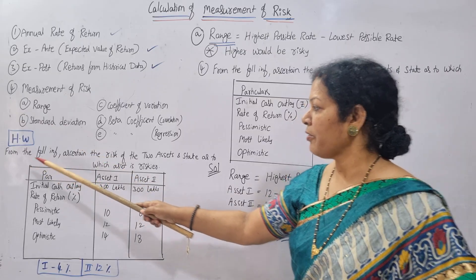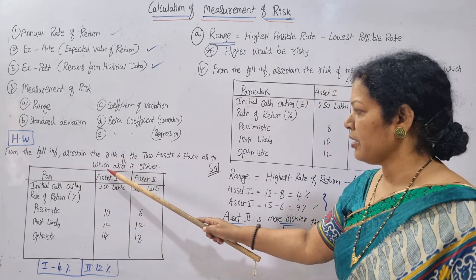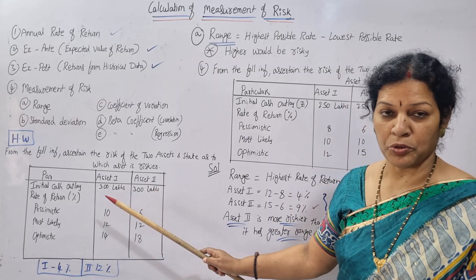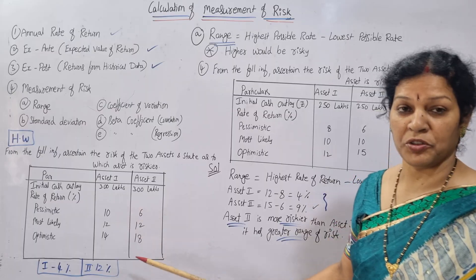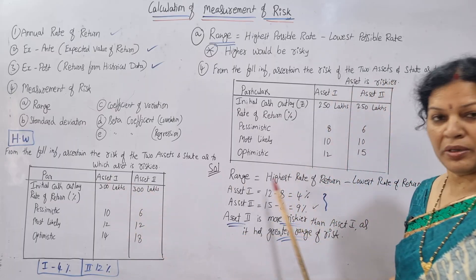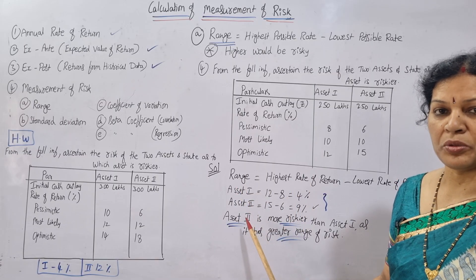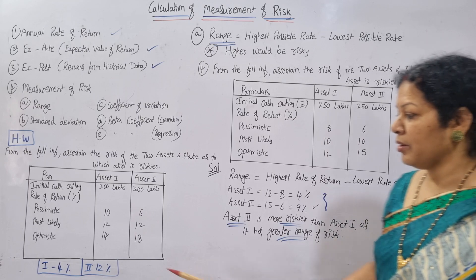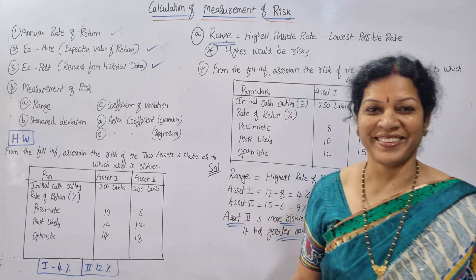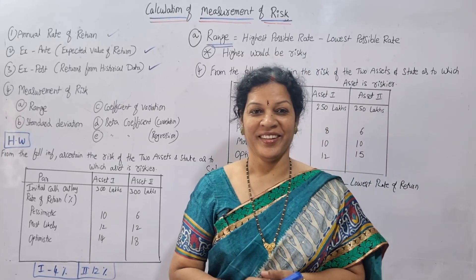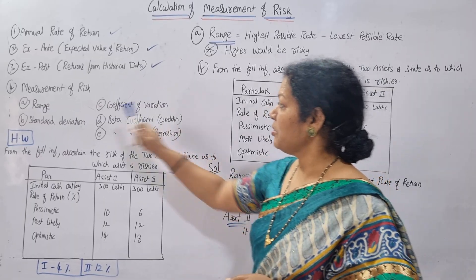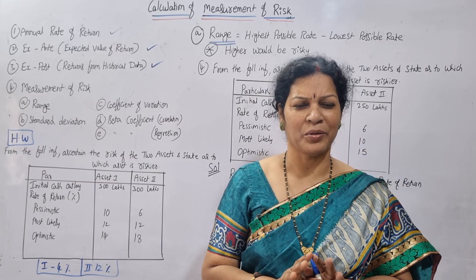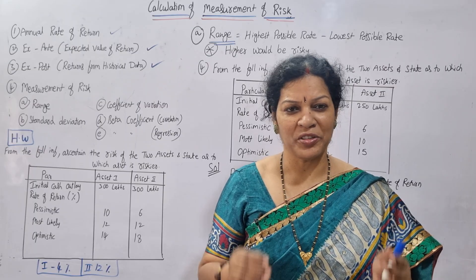Now a homework problem is given to you. From the following information, ascertain the risk of two assets and state which asset is riskier — the same kind of problem. The initial outlay is 300 lakh for both assets; we only need to worry about the rate of return. Apply the same method: find the range for Asset 1 and Asset 2, and whichever is highest is more risky. The answers are: Asset 1 is 4% and Asset 2 is 12%. In the next class, we'll go for standard deviation. Don't forget to share this video and check out the playlist. Good luck!